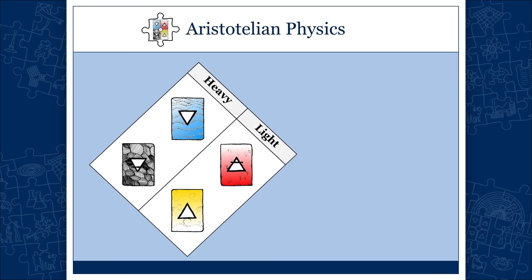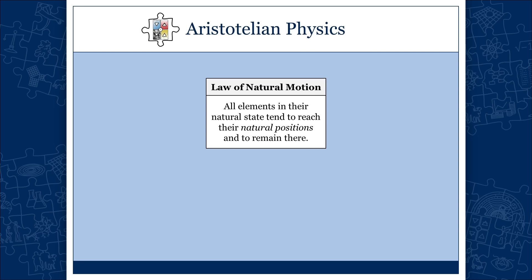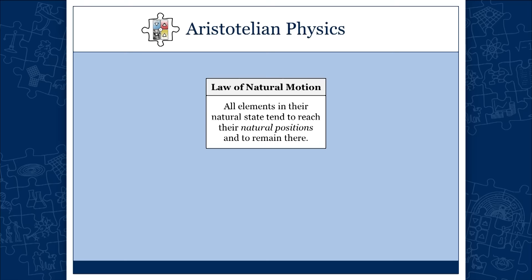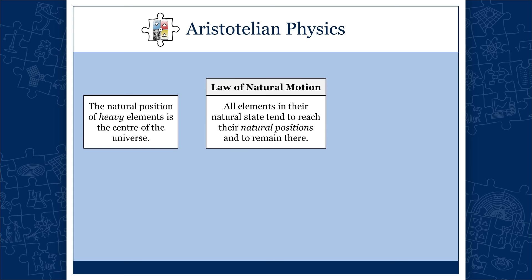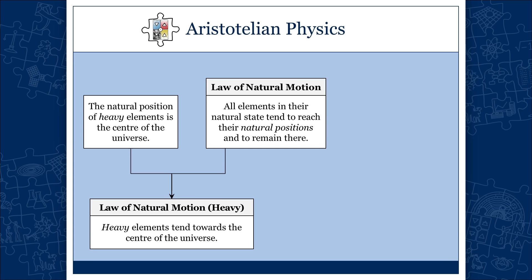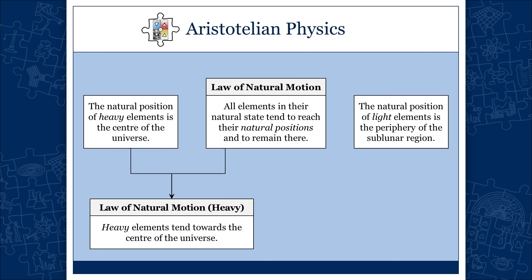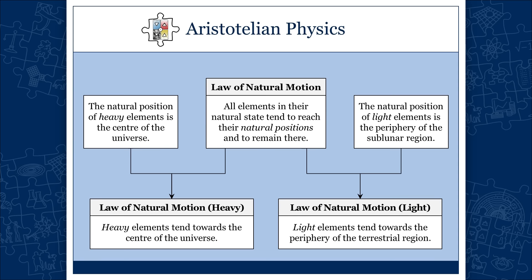Which two of these elements are heavy? Water and earth. And these two — air and fire — are light. The law of natural motion says that all elements in their natural state tend to reach their natural positions and to remain there. Every element has a natural position and the natural tendency to get to that position. For heavy elements, the natural position was thought to be the center of the universe, so heavy elements tend to collect in the center. For light elements, the natural position is the periphery of the terrestrial, sublunar region — light elements tend towards the periphery.